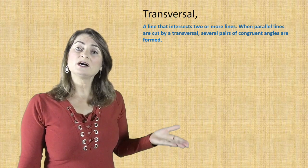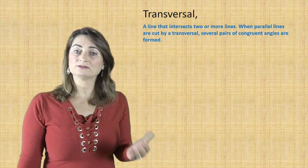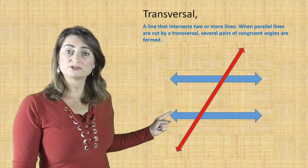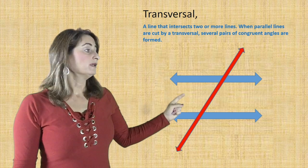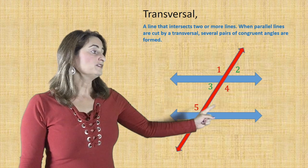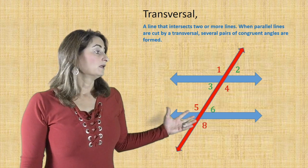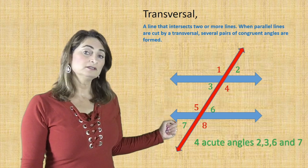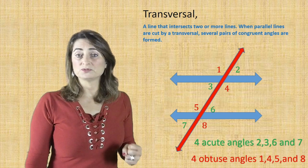When a transversal cuts two parallel lines, pairs of congruent angles are formed. Look at those two parallel lines cut by the red transversal. At the first intersection, there are four angles created: one, two, three, and four. At the second intersection, angles five, six, seven, and eight are created. Four acute angles — you can see numbers two, three, six, and seven. And four obtuse angles — one, four, five, and eight are obtuse angles.